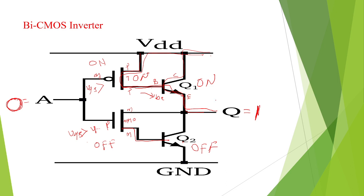Like this, it will generate either 0 or 1. While giving 0 input, it gives 1 output. While giving 1 input, it gives 0 output. This is about the BiCMOS inverter. Thank you.